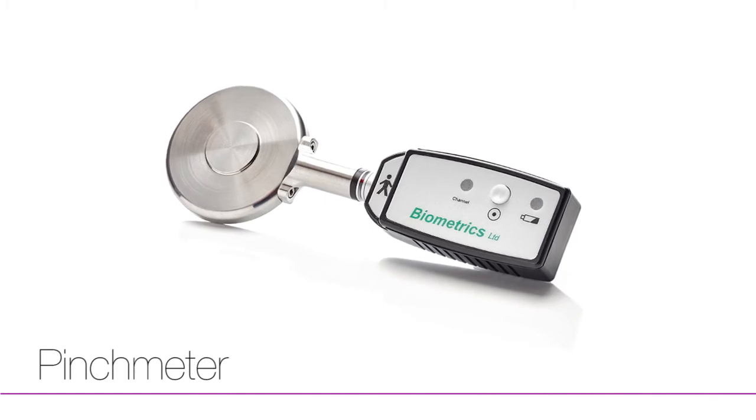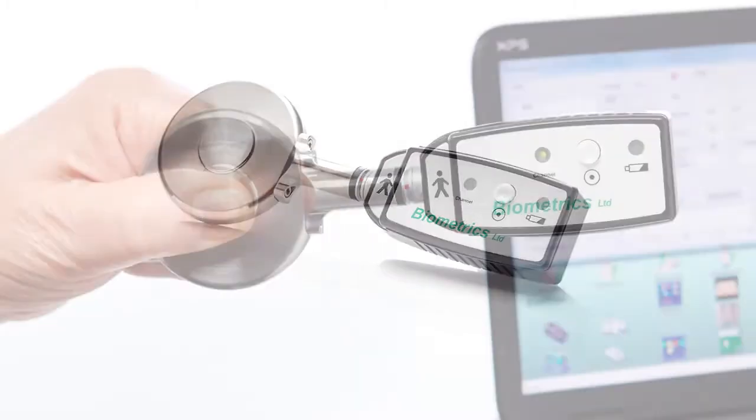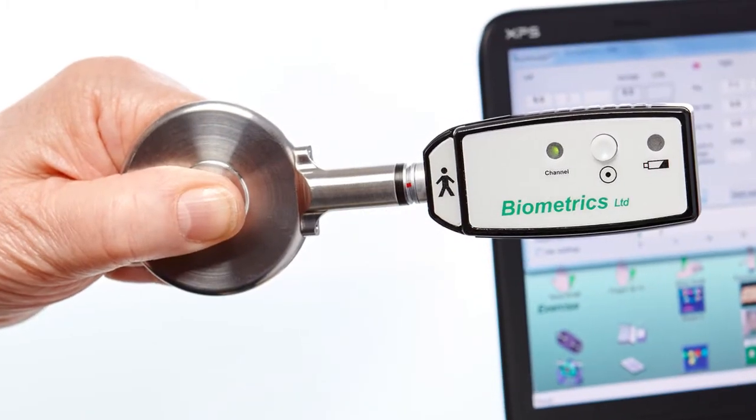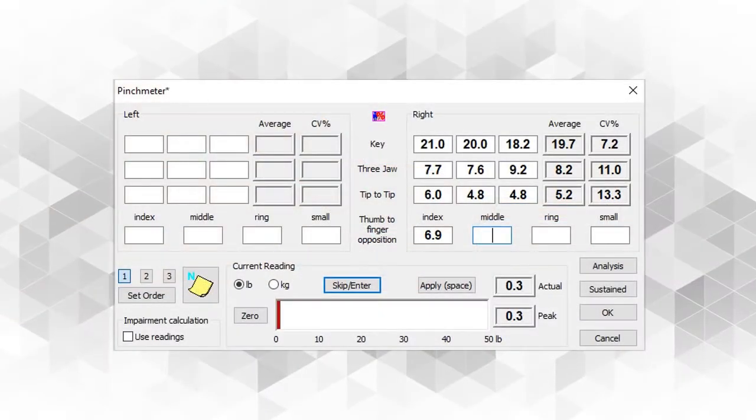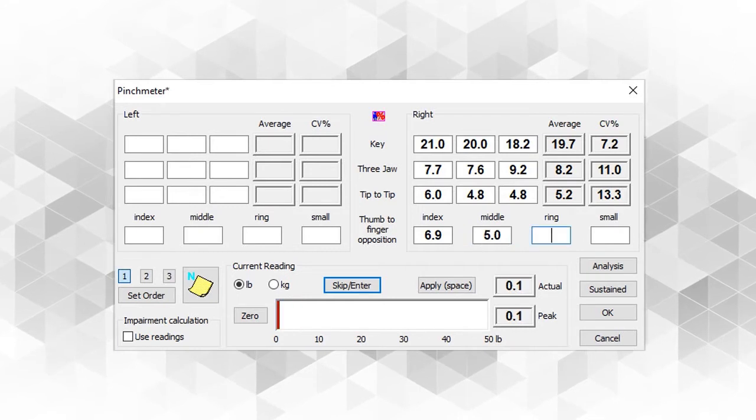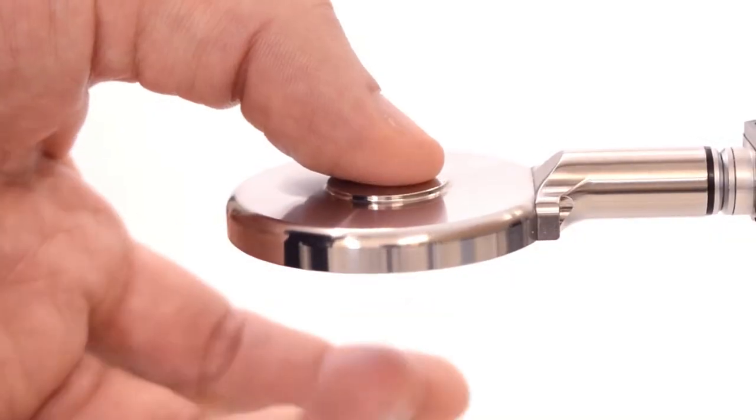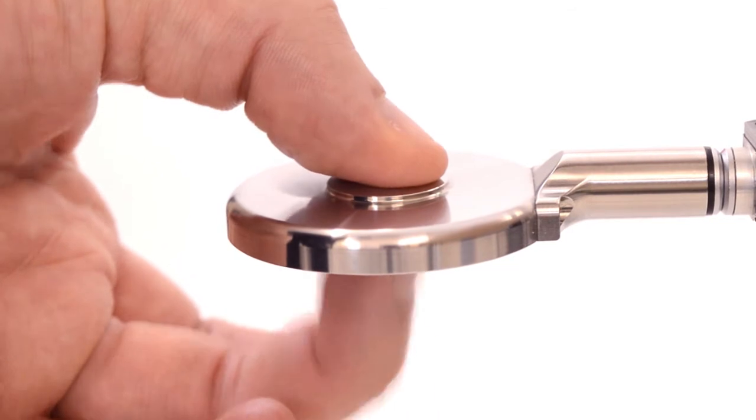Combined with grip strength tests, pinch strength measurements evaluate the collective action of many intrinsic and extrinsic hand muscles as well as several different joints. Monitoring the progress of muscle strength separately for pinch grip is relevant for functional activities that require finer movement.